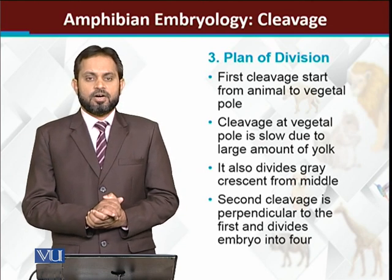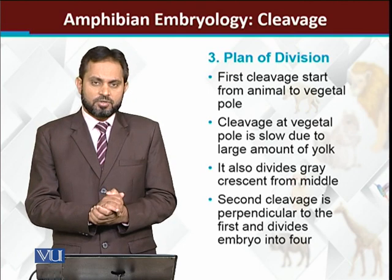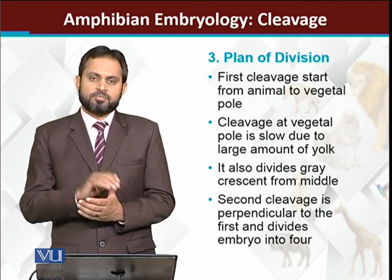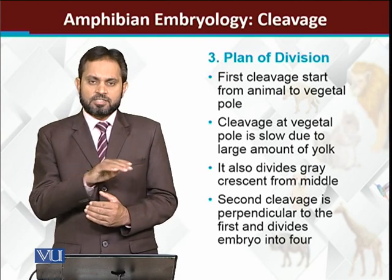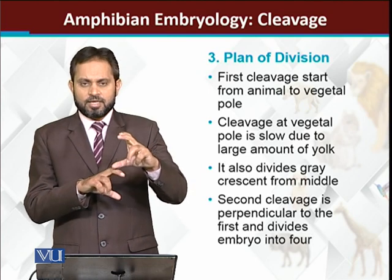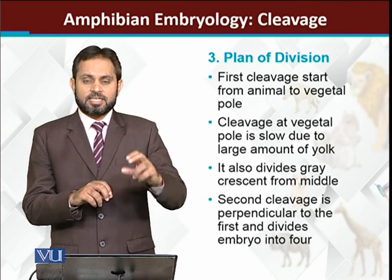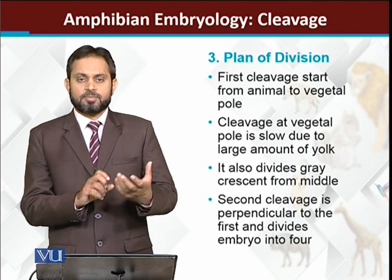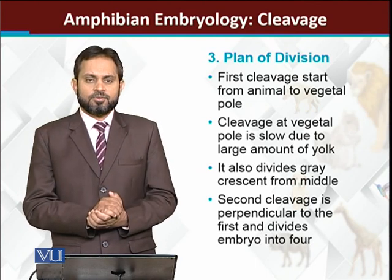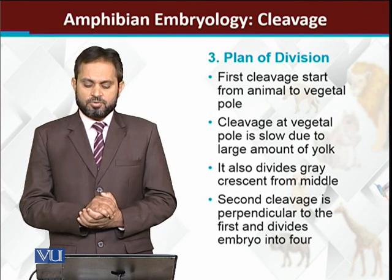The third cleavage is horizontal, passing between the animal and vegetal poles. It separates the animal pole cells from the vegetal pole portion. Animal pole cells undergo faster cell division afterward because they have less yolk, while vegetal pole cells divide slowly and are generally larger because they contain more yolk.